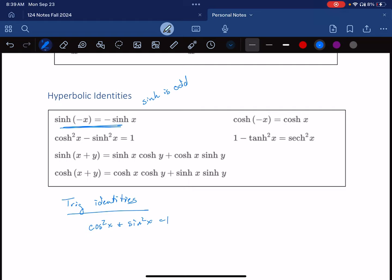meaning symmetric about the origin. Over here, you have a similar identity for hyperbolic cosine, except this identity shows that it's an even function, symmetric about the y-axis. And then here you have a similar to the Pythagorean identity for hyperbolic cosine. And then here are the additive identities.